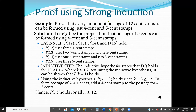Now, proving using Strong Induction: we can prove that every amount of postage of 12 cents or more can be formed using just 4-cent and 5-cent stamps. Let P(N) be the proposition that postage of N cents can be formed using 4-cent and 5-cent stamps. The basis step holds for P(12), P(13), P(14), and P(15).